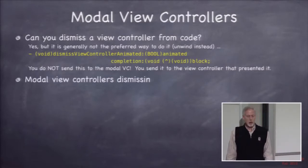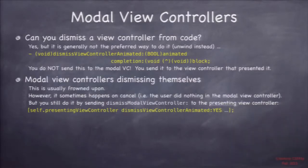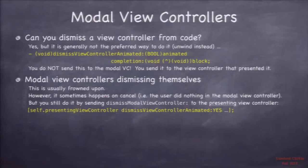Luckily, if you want to say that from within the actual view controller, there's a nice method in UIViewController called presenting view controller, which will tell you who presented you, if anyone presented you. So you can dismiss yourself by saying self.presentingViewController.dismiss animated, and since by definition that view controller presented you, it's going to dismiss you.